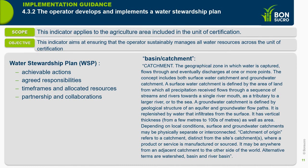From the implementation point of view, that plan needs to be constructed by the company with achievable actions — resources for use, meetings, trainings — agreed responsibilities specifying who or which department is responsible, timeframes and allocated resources indicating what indicators will be controlled and what resources are needed, and partnership and collaborations with NGOs, governments, other mills, other users, other agricultural crops, and other industries using that water. This requires meeting with them and constructing the plan with objectives, taking into account the catchment — the geographical zone where all rainfall flows to the same river.